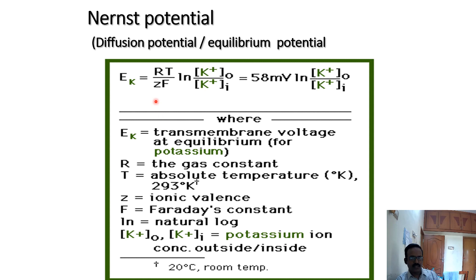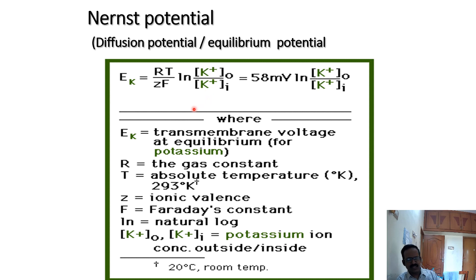The Nernst potential is calculated by the formula: EK equals RT over ZF, times the log of potassium outside over potassium inside. R is the gas constant, T is the absolute temperature, Z is the ionic valency, and F is the Faraday constant. Substituting RT over ZF gives approximately 58 to 60 millivolts. Using the logarithm of potassium outside over inside, we can calculate the Nernst potential for potassium; similarly, we can calculate it for sodium and chloride. According to the Nernst equation, we can calculate the equilibrium potential for each ion.